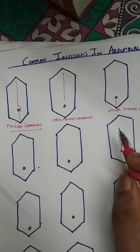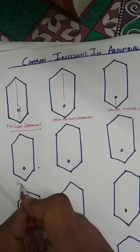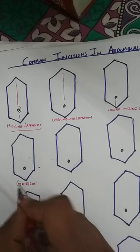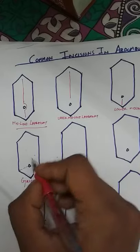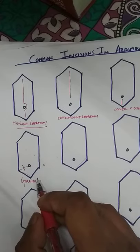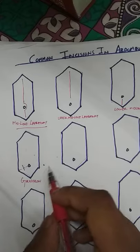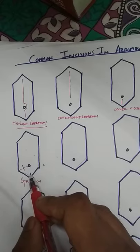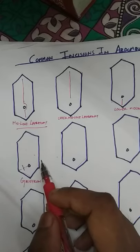The next very important incision is called the Gridiron incision — G-R-I-D-I-R-O-N. This incision is at the McBurney's point, parallel to the external oblique muscle, and is basically used in cases of appendicectomy.